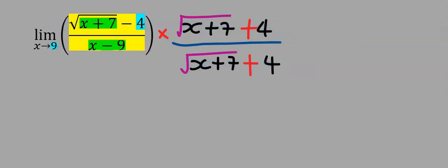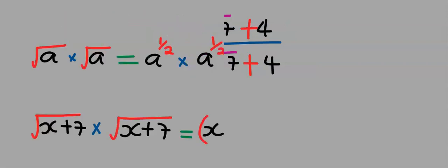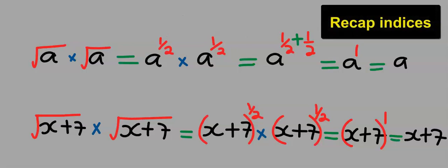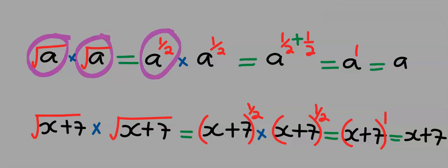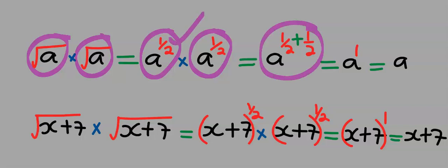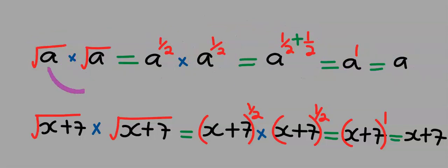Before we go to the next step, let's recap from laws of indices: square root of a multiplied by square root of a is the same as a to the power of one-half multiplied by a to the power of one-half. One-half plus one-half equals one, which is the same as a. You can see that because these two are the same, it returns just one of them, considering the square roots.